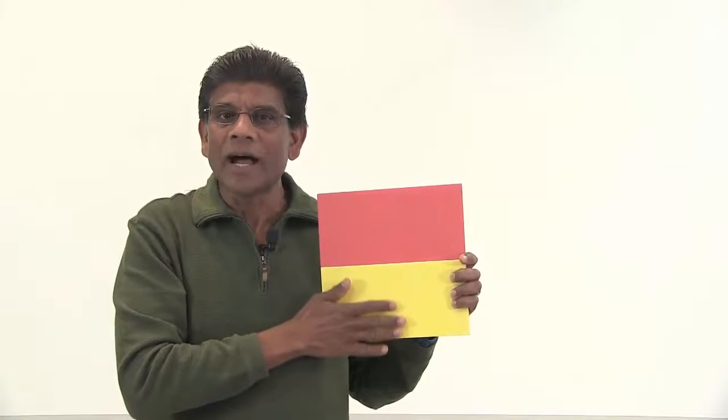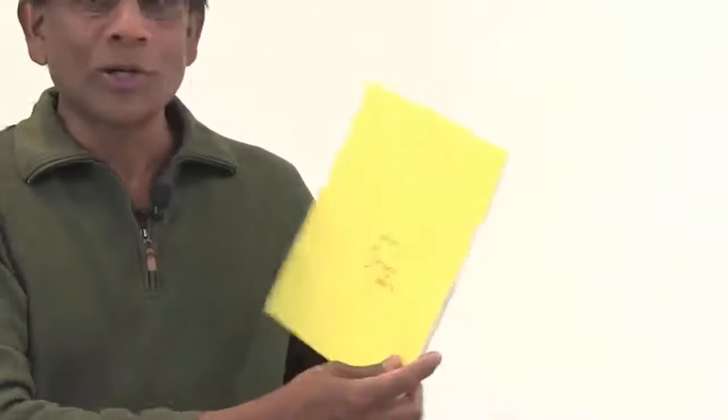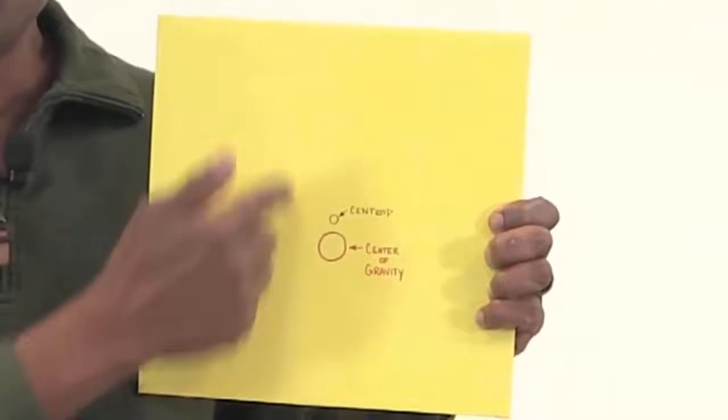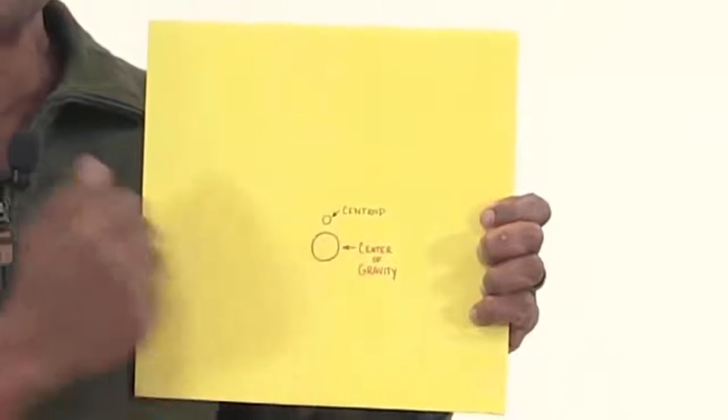In this case, the centroid will still be in the middle, as it is the geometric center of the square. But the center of gravity moves towards the heavier side. Those two points are shown here, and as you can see, they are not the same.